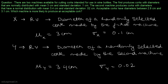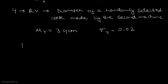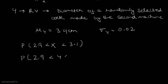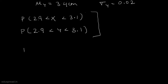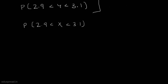We have to find which machine is more likely to produce an acceptable cog when acceptable cogs have diameters between 2.9 cm and 3.1 cm. The problem boils down to finding the probability that x lies between 2.9 and 3.1, and the probability that y lies between 2.9 and 3.1. After finding these two probabilities, we will see which is greater, and that gives us the answer.